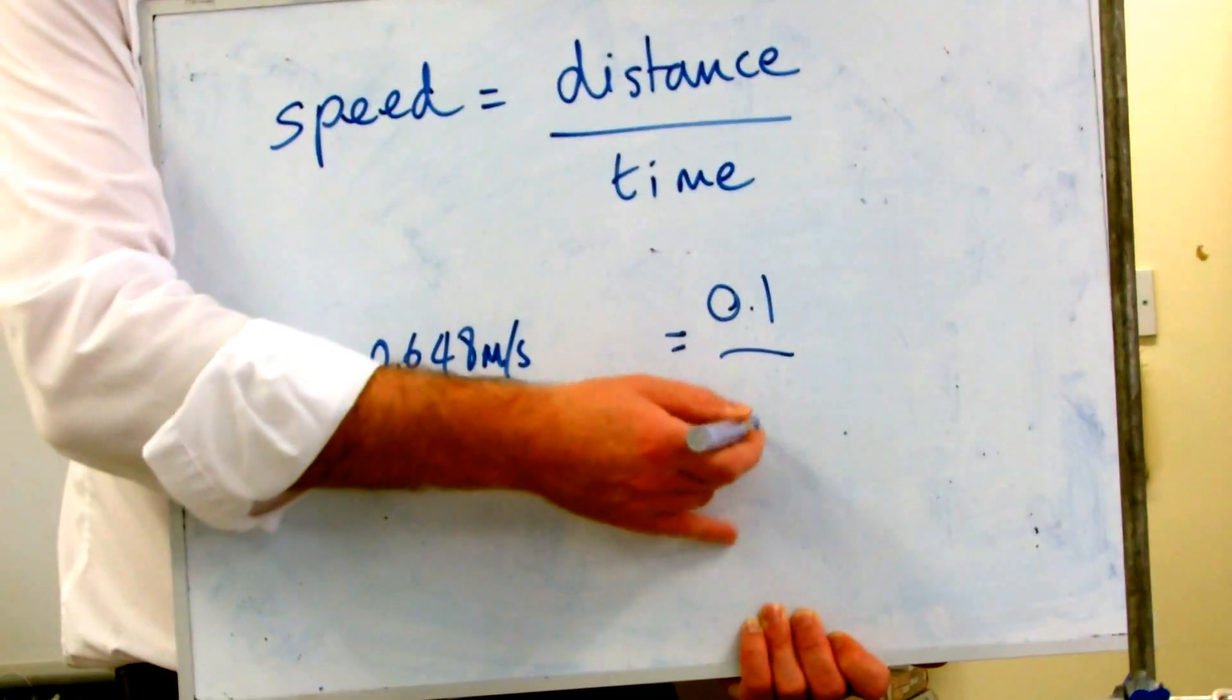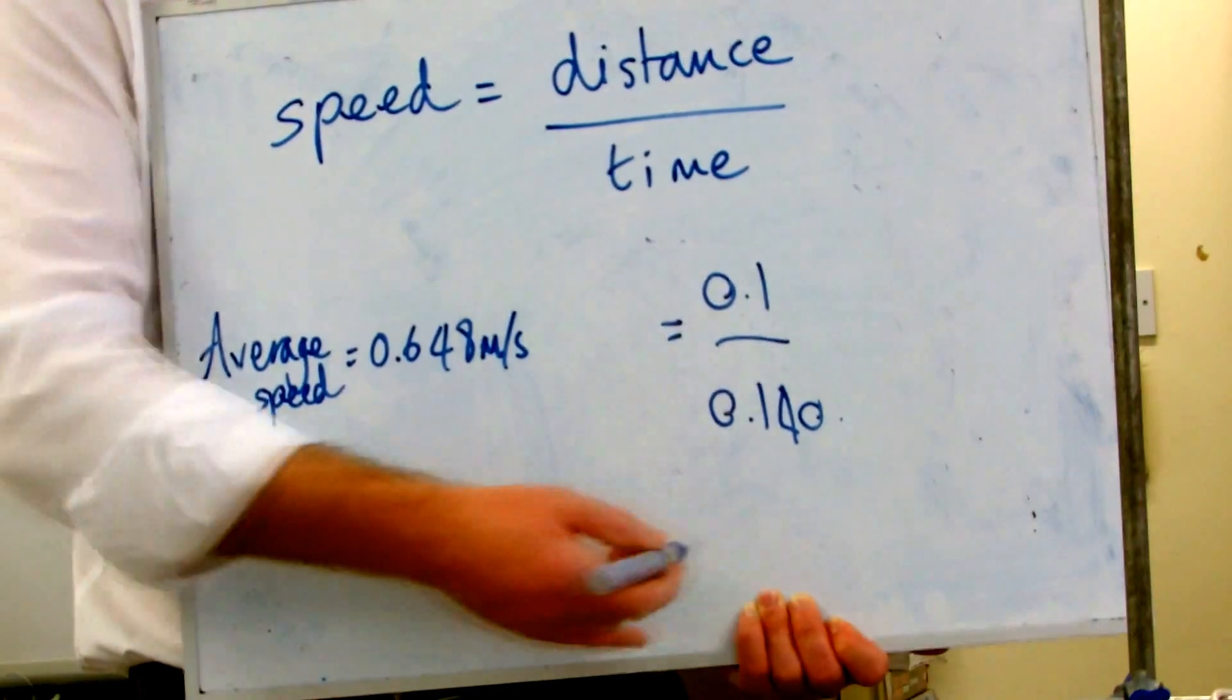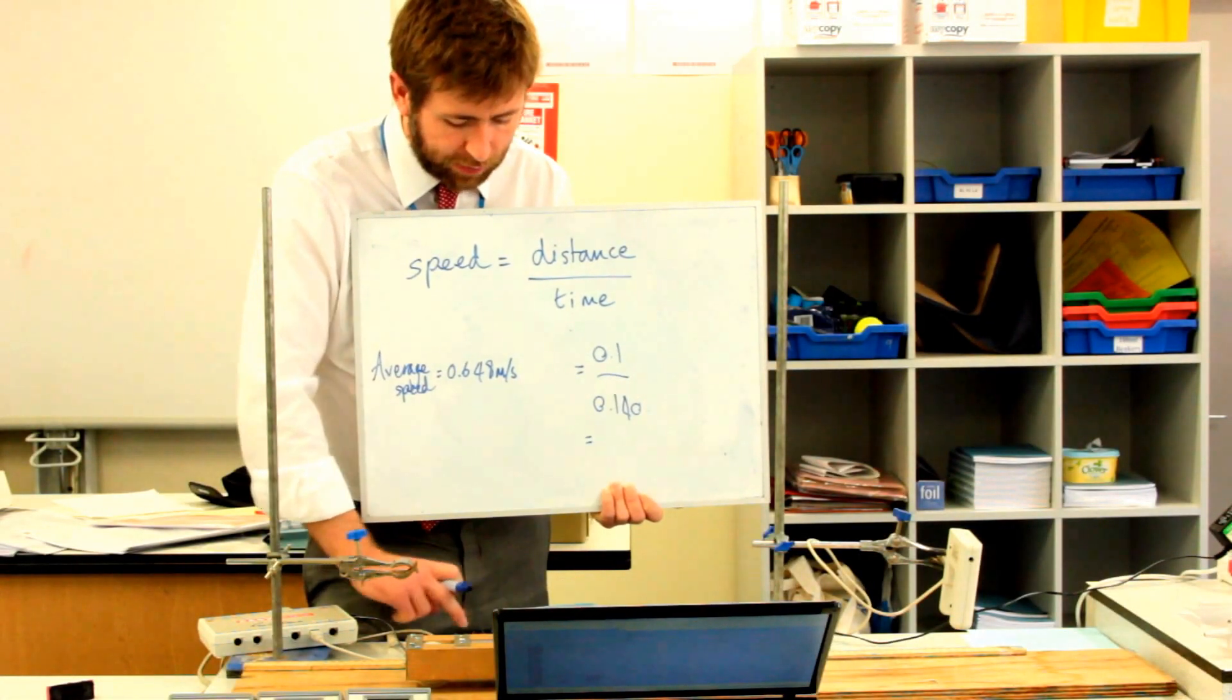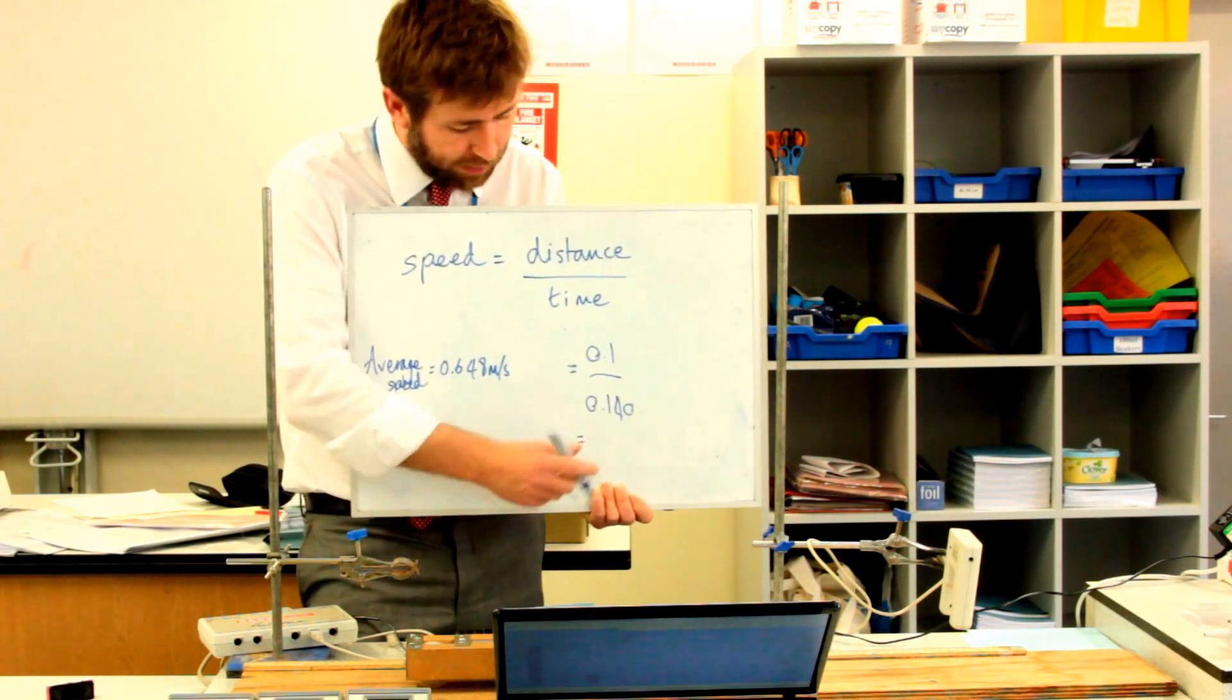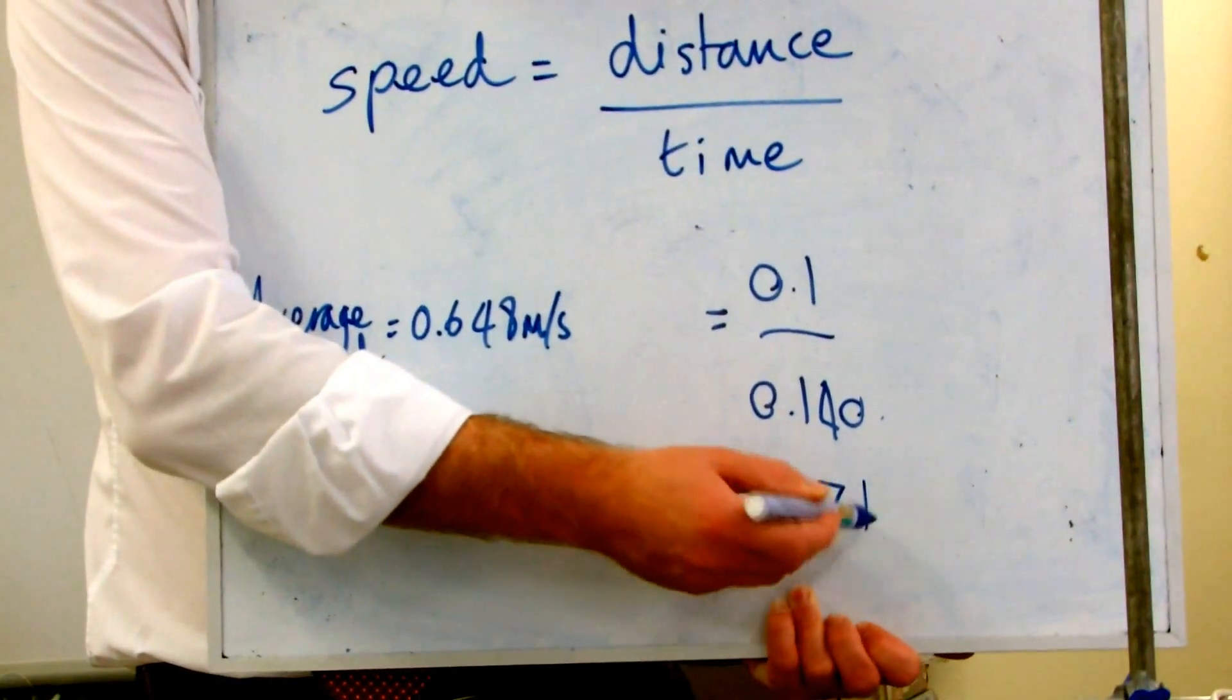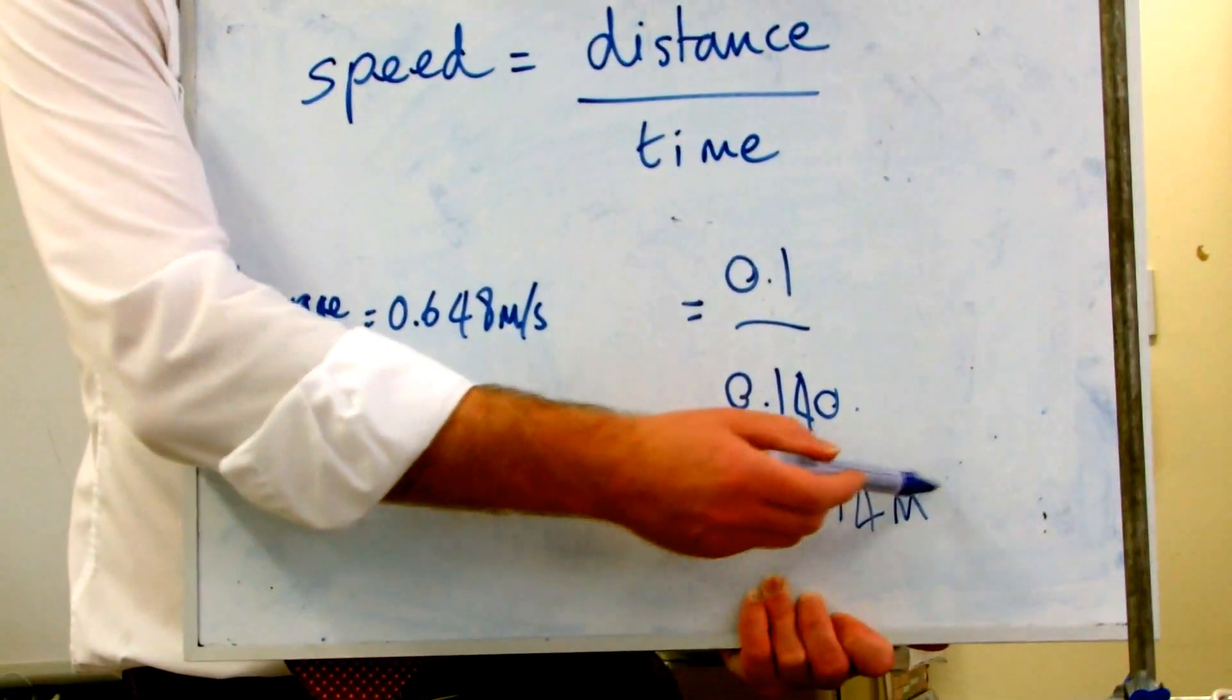The time we got was 0.140 seconds. So in the calculator, 0.1 divided by 0.140 gives us 0.714 meters per second.